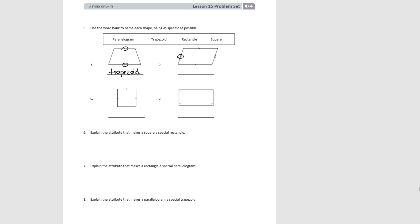For B, we see one set of parallel sides and a second set of parallel sides, so two sets of parallel sides makes this a parallelogram. In shape C, we have four sides all of the same length and square corners or right angle corners — this makes it a square. And finally, we have opposite sides parallel and four right angles, which makes this a rectangle.